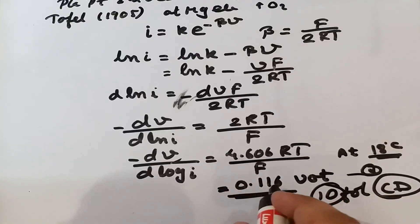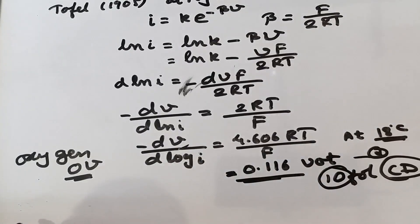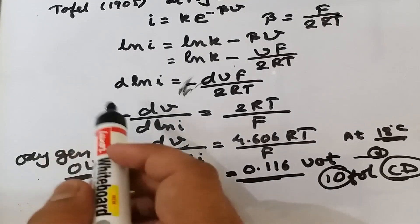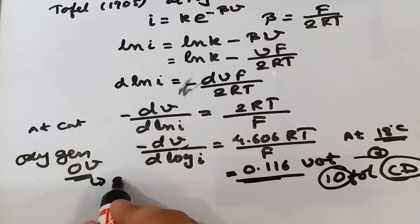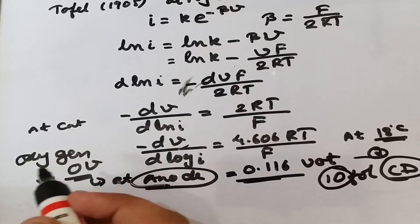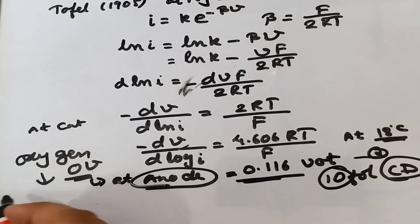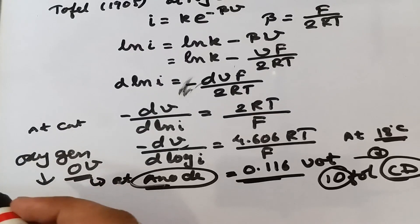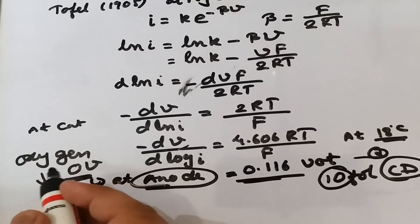Each 10-fold increase in current density will reduce the cathode potential by 0.116 volts, meaning it increases the hydrogen overvoltage. Now, for oxygen overvoltage: hydrogen is generally liberated at the cathode, while oxygen is liberated at the anode. Oxygen overvoltage is defined as the practical potential at which oxygen evolution starts at the anode minus the theoretical value.